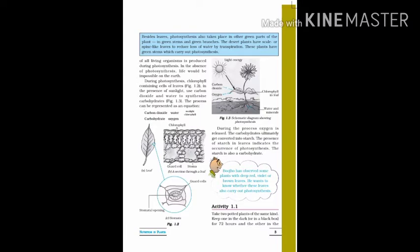Some plants have deep red, violet, or brown leaves. He wants to know whether these leaves also carry out photosynthesis. We learned that only green leaves can make food, but Bujo has observed some plants with red, violet, or brown leaves. He thinks about whether these plants do the same kind of photosynthesis process or not. So this is what we should know about.